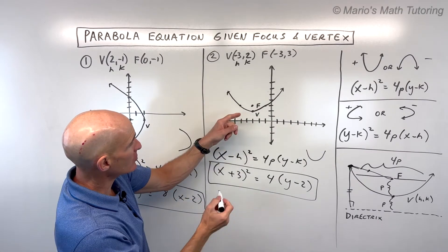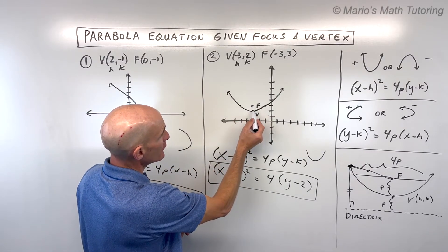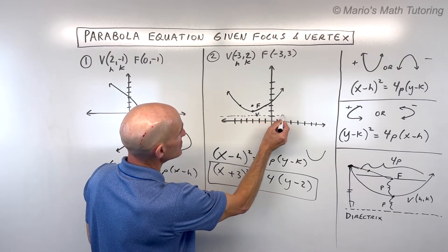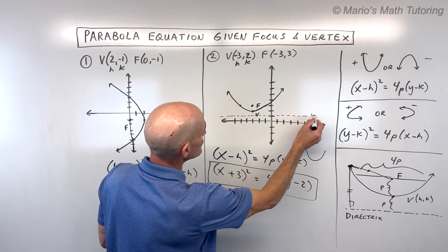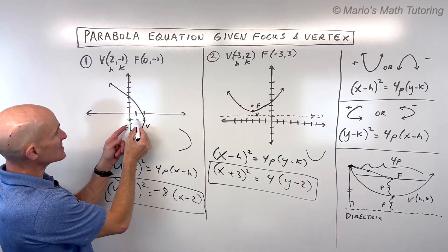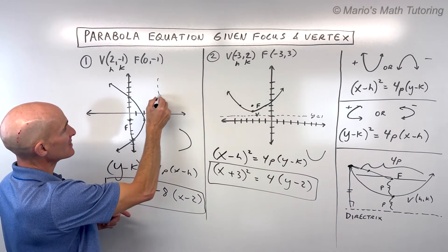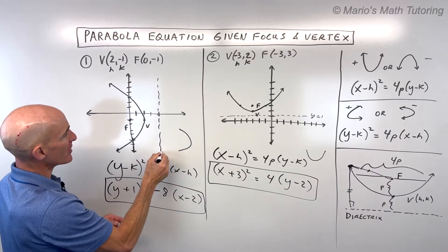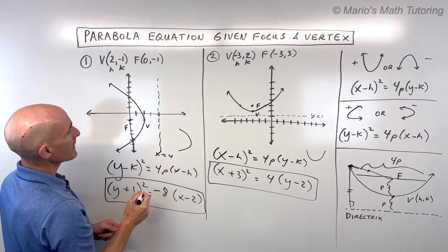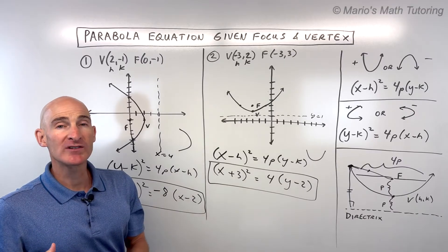If we want to graph it, at the level of the focus it's 4p wide, so 4p is 4. If I cut that in half, I go from the focus 2 to the right and 2 to the left, giving us easy-to-identify points on our graph. If we wanted to graph the directrix, since the distance to the focus is 1, we go down 1 — that's the equation y equals 1. For example one, if the distance is 2 and we go to the other side of the vertex, the directrix is at x equals 4.